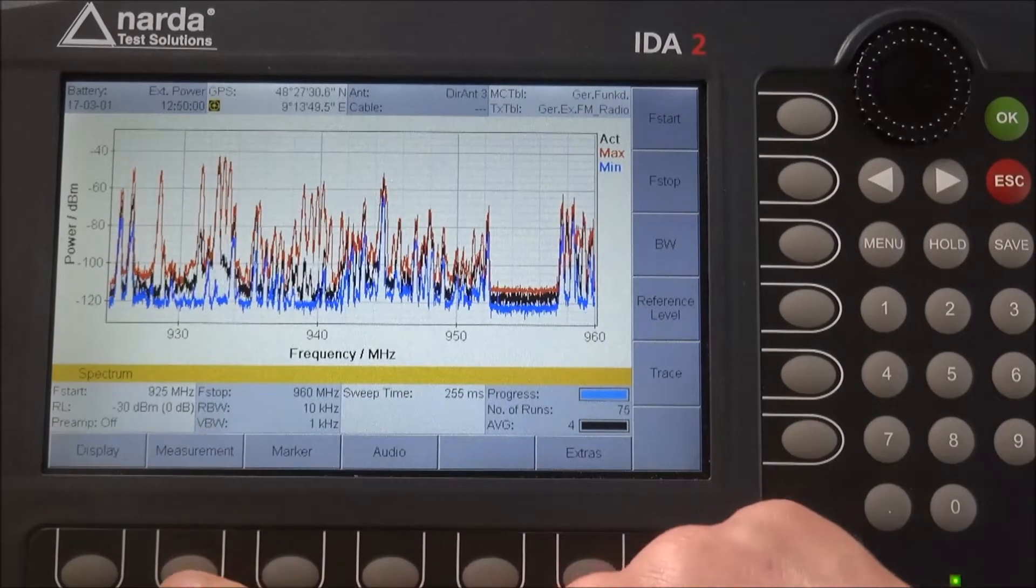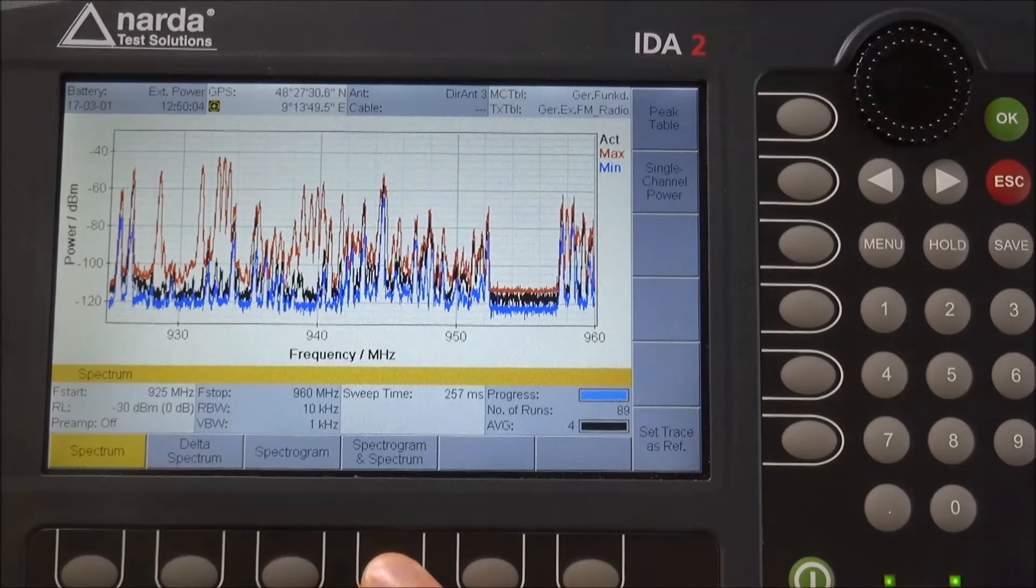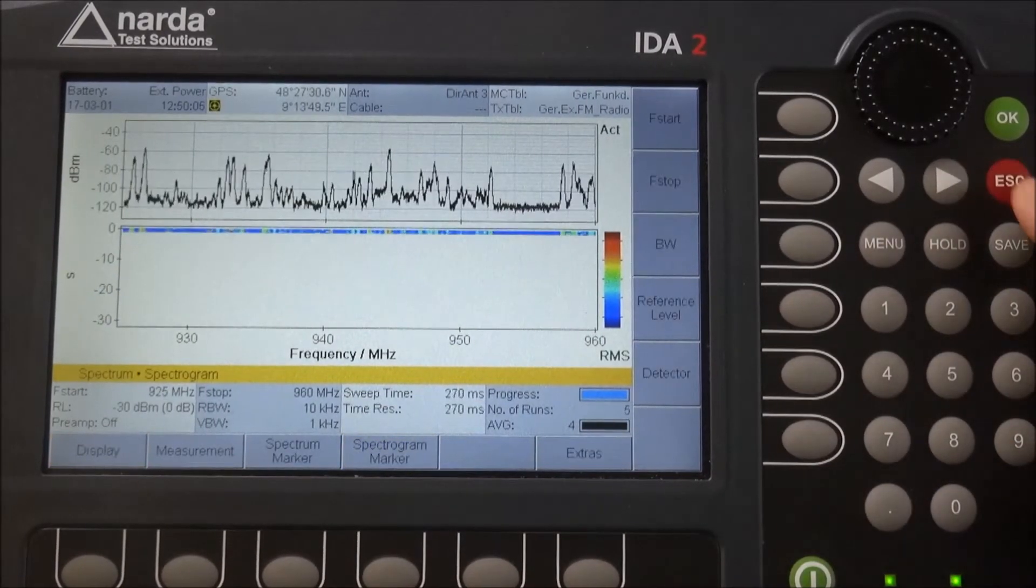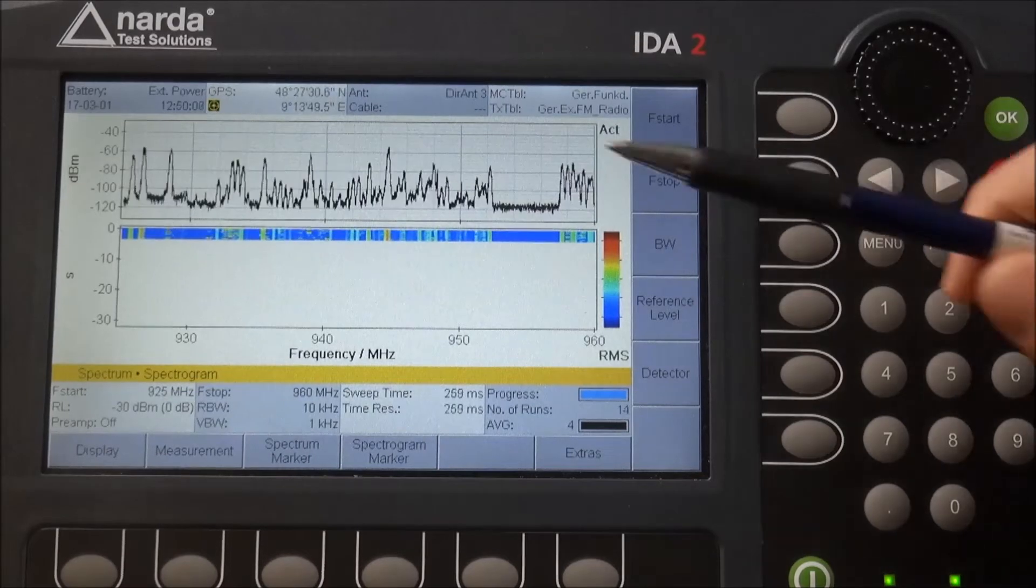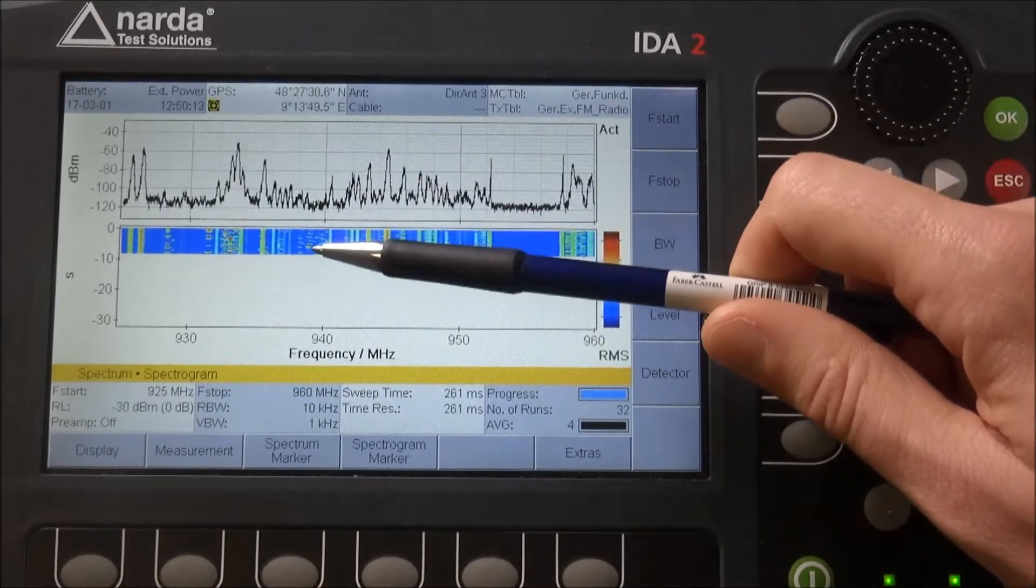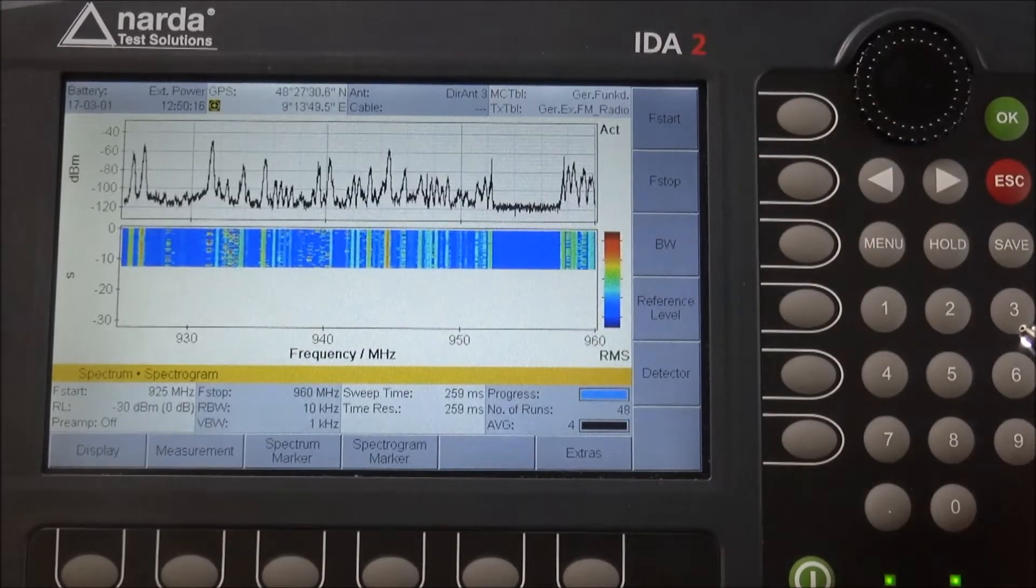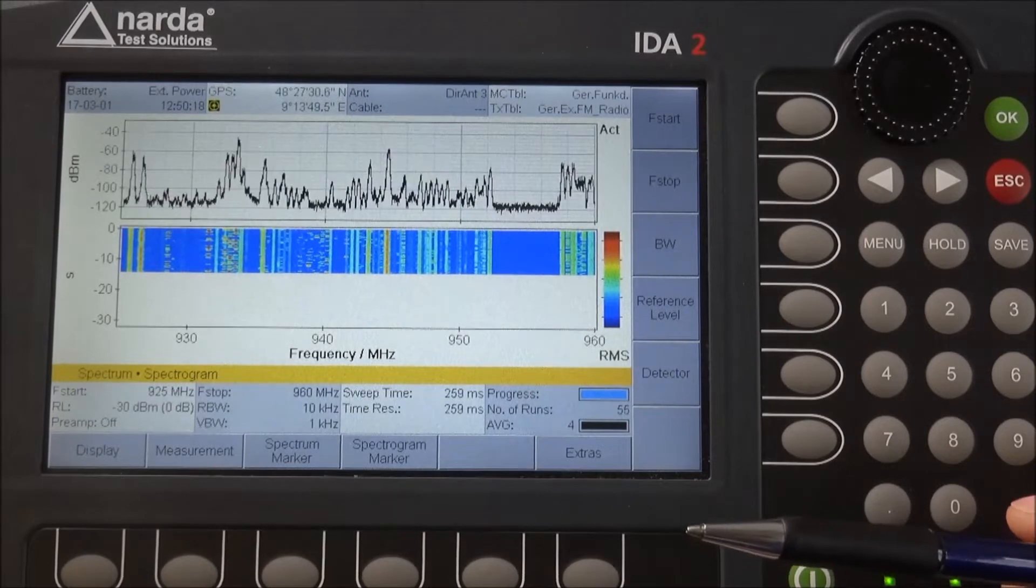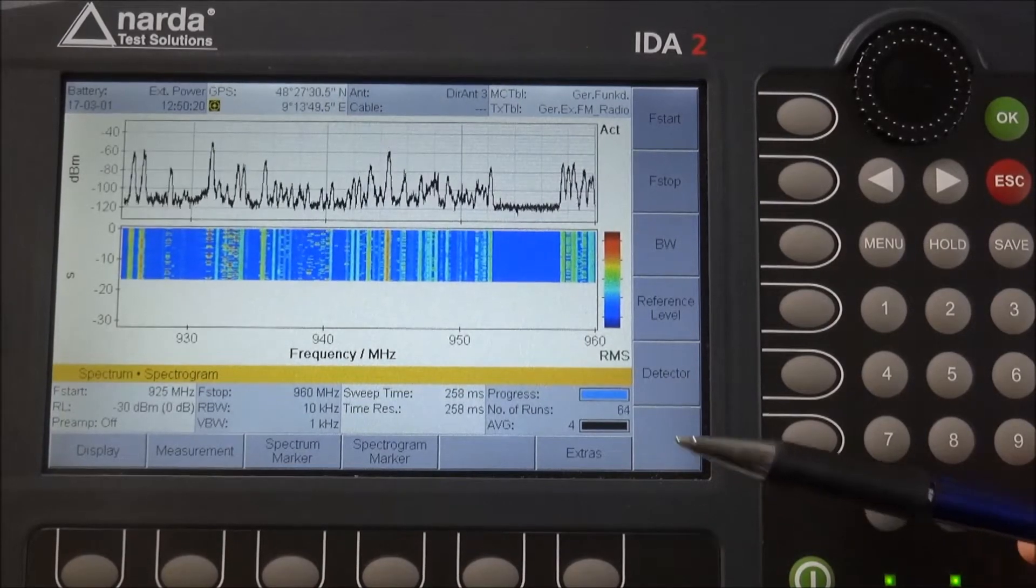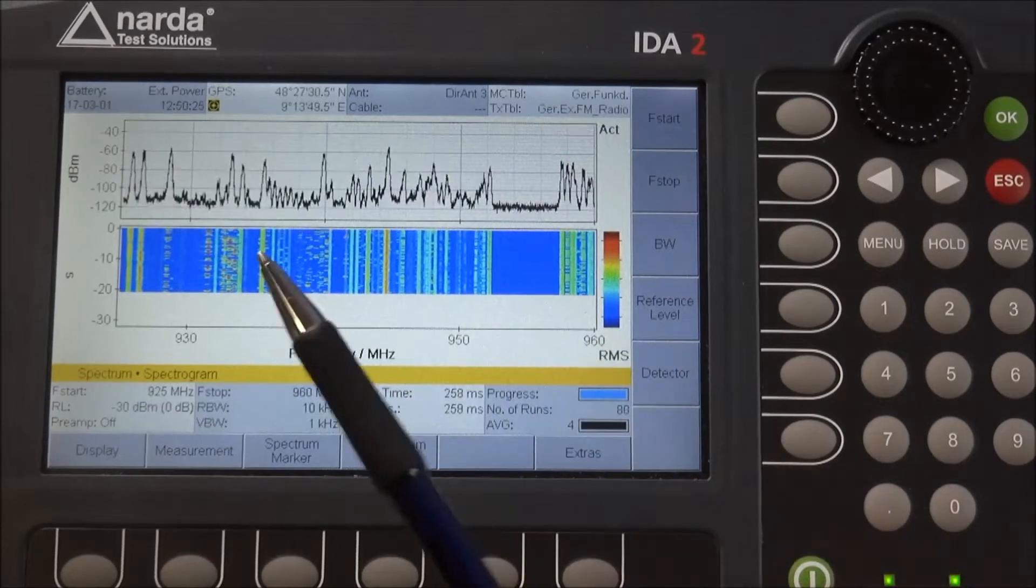Personally, I like to work in the spectrogram spectrum dual view because then you'll see very nicely how specific signals are pulsed or simply sporadic. Right now we're looking at GSM 900.